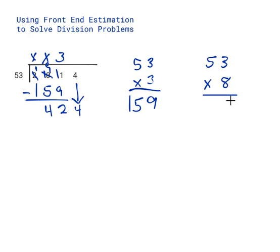8 times 3 is 24. Carry the 2. 8 times 5 is 40. 40 plus 2 is 424, which is exactly the number we have. So when I subtract it, I have 0 remaining.